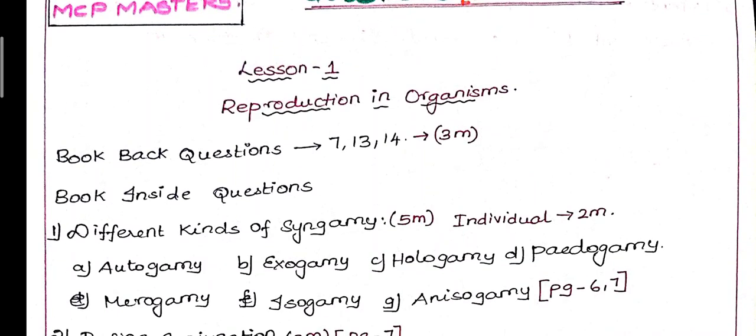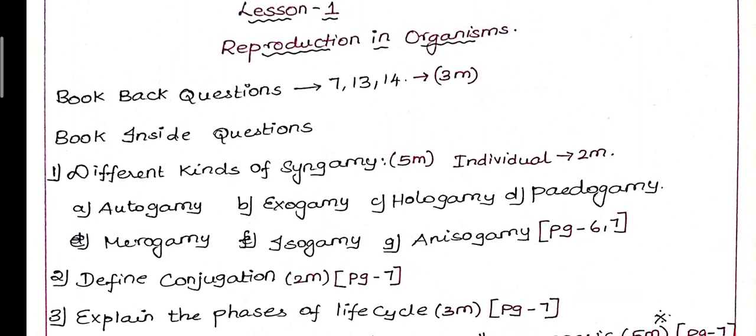First lesson, Reproduction in Organisms. We will talk about the book back questions - 7th question, 13th question, 14th question. We will try to reduce this lesson. So in the book back, 7, 13, 14, this is a 3 mark.